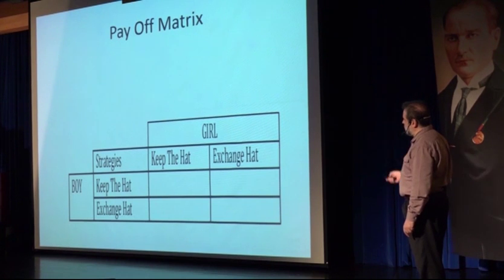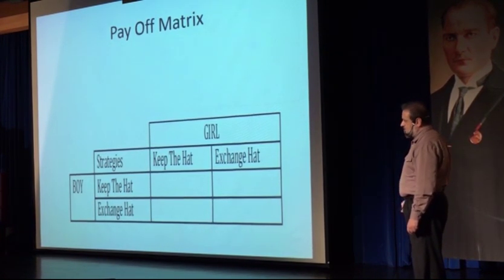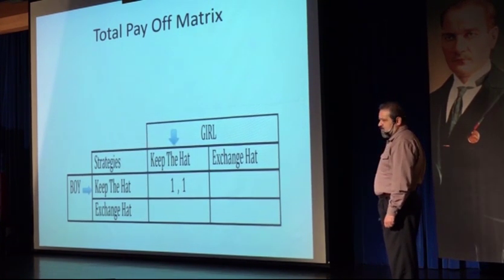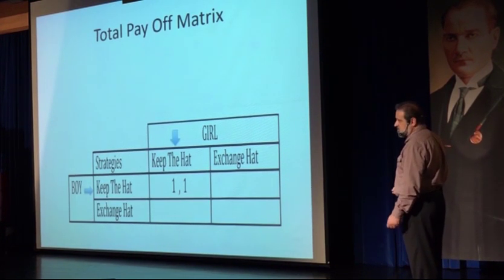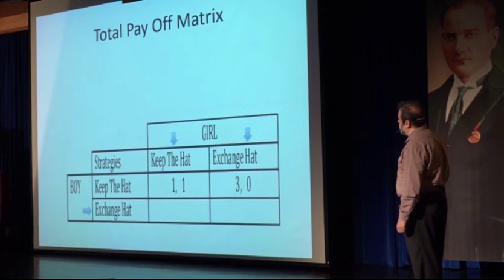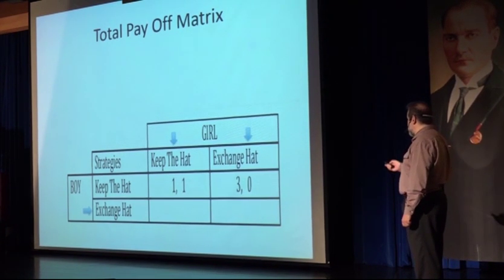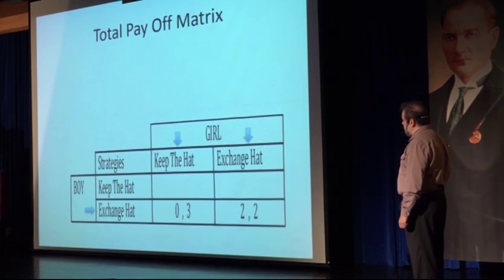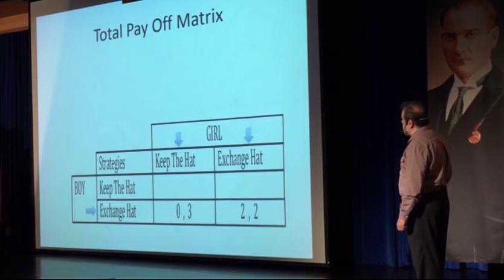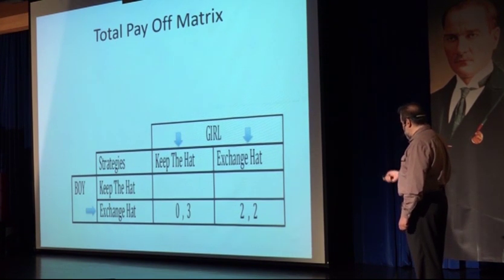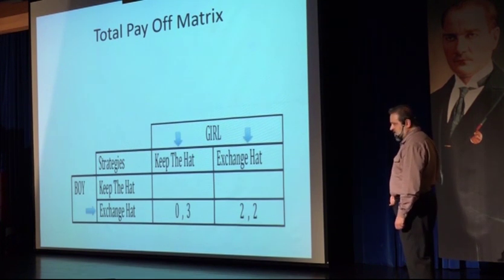We have the strategies of the boy and the girl — they are identical. Let's play the game. If he chooses keeping the hat and she does the same thing, they will both have a payoff of one and one. If the boy keeps the hat and she exchanges it, that's bad news for her, because he's going to get three and she will have zero. If he exchanges the hat and she keeps it, it's bad news for the boy — she's going to get three and he will get zero. And if they exchange the hat fairly, both are going to get two. What do you think the result of the game would be?